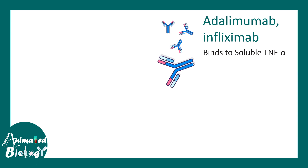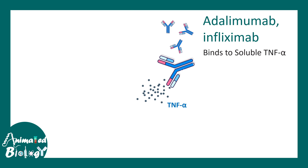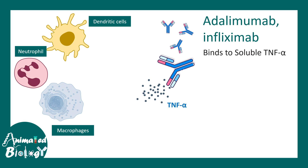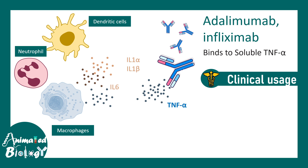Adalimumab or infliximab — all of these would basically bind to soluble TNF-alpha. Which cell types actually secrete TNF-alpha? Many immune cell types such as macrophages, neutrophils, and dendritic cells are secreting interleukin-1, interleukin-6, and TNF-alpha — all of these are actually inflammatory mediators. That is why they could be used for diseases like inflammatory bowel disease or rheumatoid arthritis where inflammation has to be controlled.